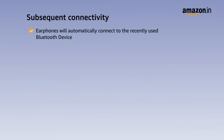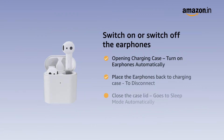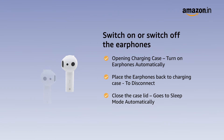Subsequent connectivity: While the earphones are in the charging case, opening the case will cause the earphones to automatically connect to the most recently used Bluetooth device. Once you open the charging case, the earphones will automatically turn on. To disconnect the earphones, place them back into the charging case and close the lid — this will put the earphones to sleep mode automatically.